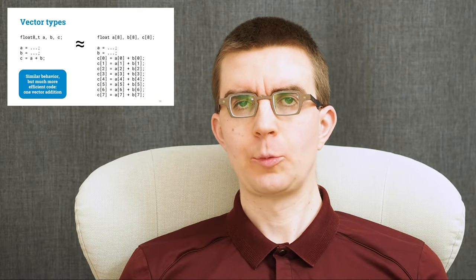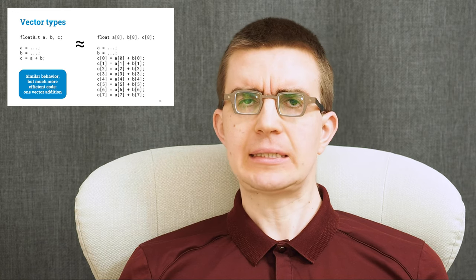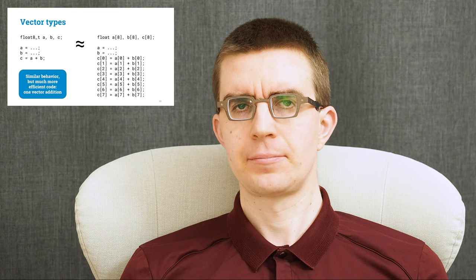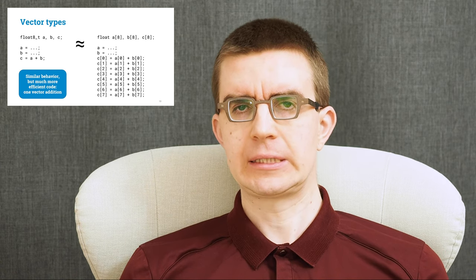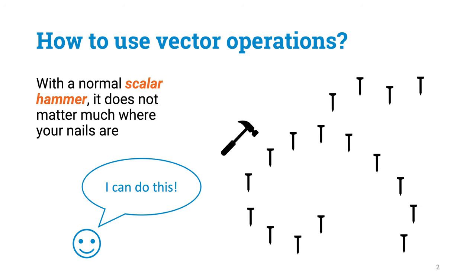In the previous part we learned what vector operations can do and how to use them in C++. But it may seem that these are rather strange operations — we could do vector additions fast, but how often do you have code in which you would need to do that? Let me tell a silly story that may help you get the right mindset.